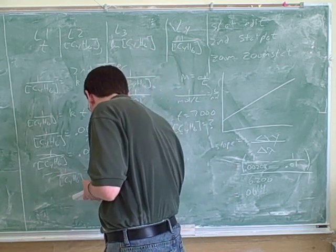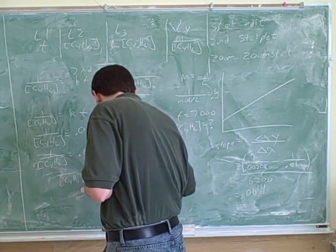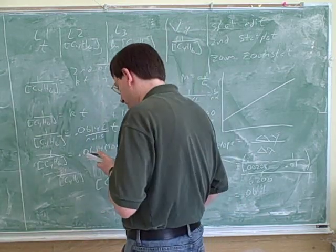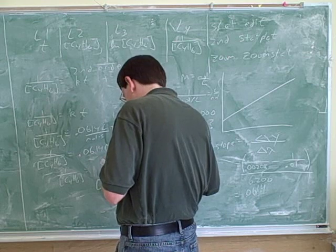We just take the reciprocal of both sides. You do 1 divided by 529.8. 1 divided by 529.8 is the reciprocal.